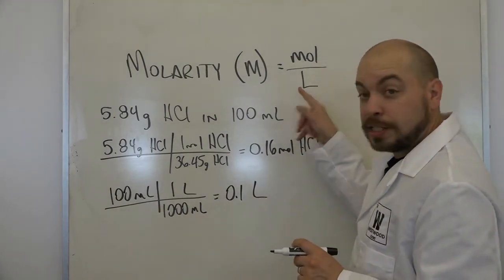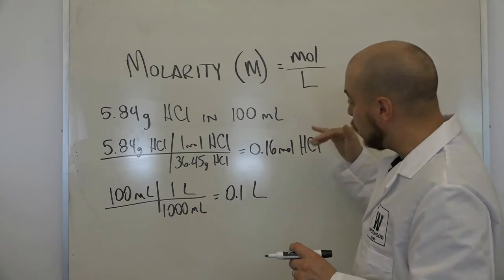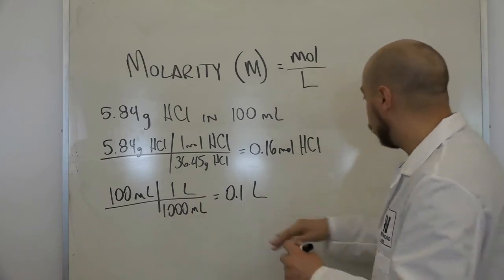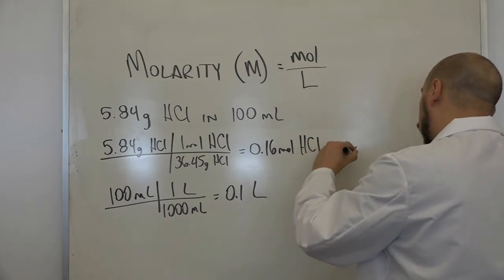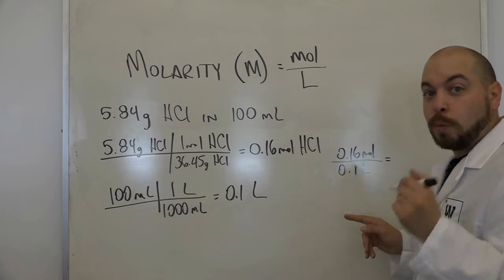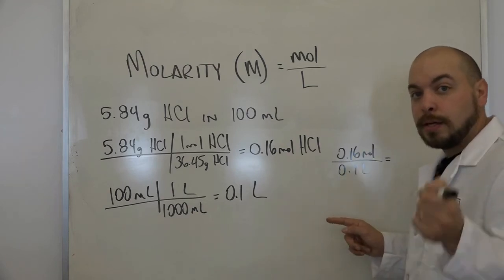Now remember, our final unit needs to be moles per liter. So we take our number of moles, 0.16, divided by the number of liters, and we end up with a value of 1.6 molar.